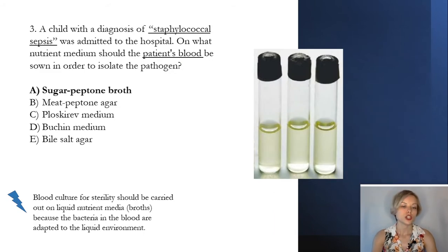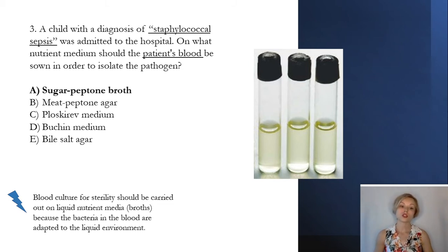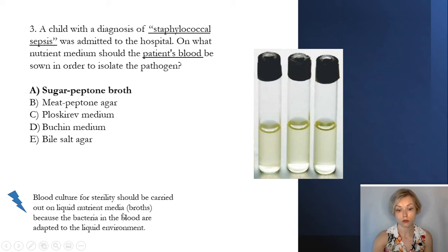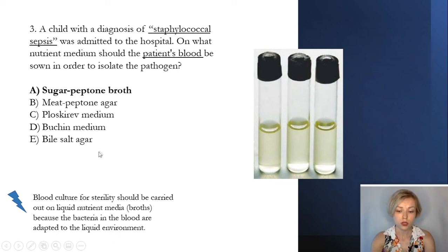Next question. A child with a diagnosis of staphylococcal sepsis was admitted to the hospital. On what nutrient medium should the patient's blood be sown in order to isolate the pathogen? The correct answer is Sugar-Peptone broth. Blood culture for sterility should be carried out on liquid nutrient media such as broth, because bacteria in the blood are adapted to the liquid environment — all other culture media in the possible answers are solid. Therefore, the correct answer is Sugar-Peptone broth.